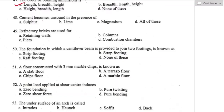Question number forty-eight: cement becomes unsound in the presence of sulfur trioxide, lime, and magnesium. All these options are correct. Option D is the right answer — all of these.